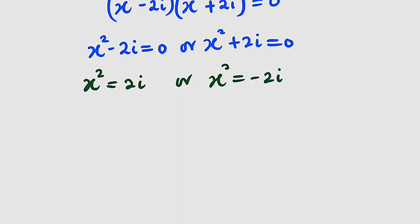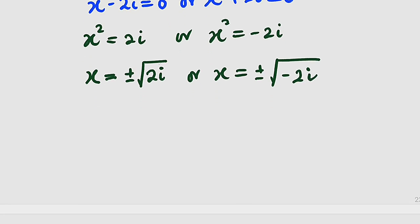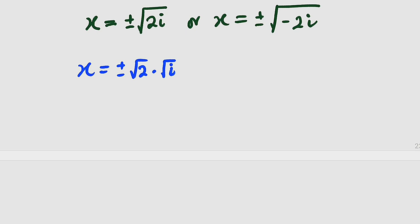We can take the square root of both sides. From the first equation we have x equal to plus or minus the square root of 2i, and from the second, x equal to plus or minus the square root of negative 2i. We can separate this as plus or minus the square root of 2 multiplied by the square root of i. Square root of 2 remains square root of 2, but what about square root of i? From a previous lesson, we have seen that the square root of i equals root 2 divided by 2 plus root 2 divided by 2 times i.